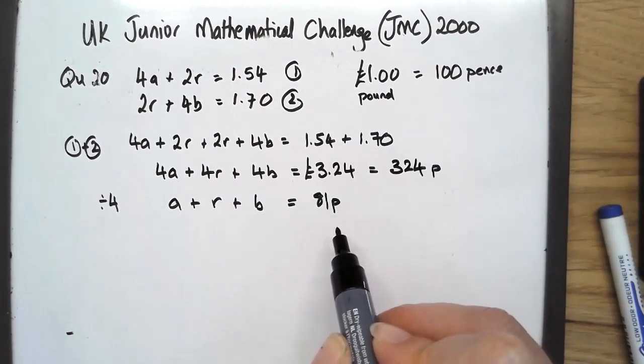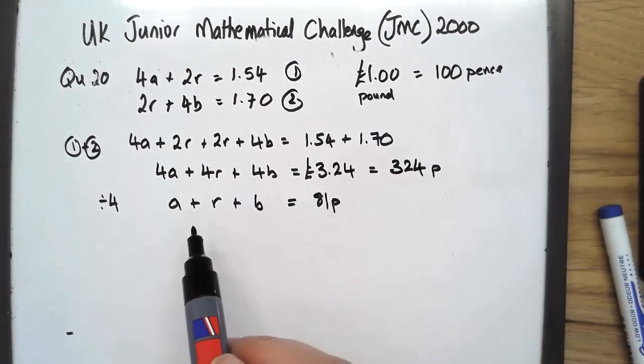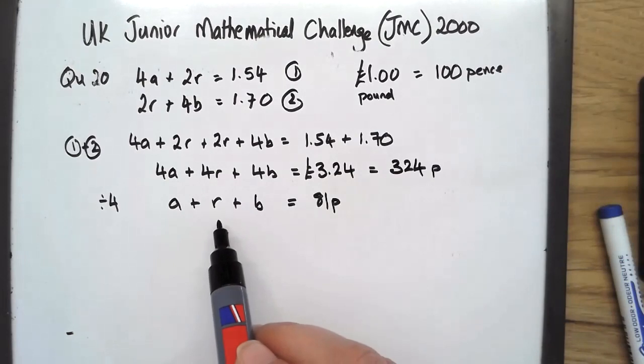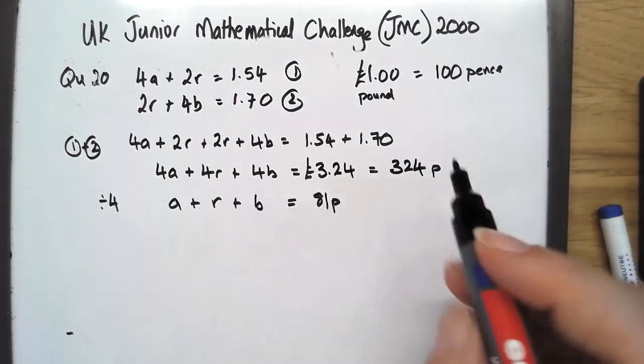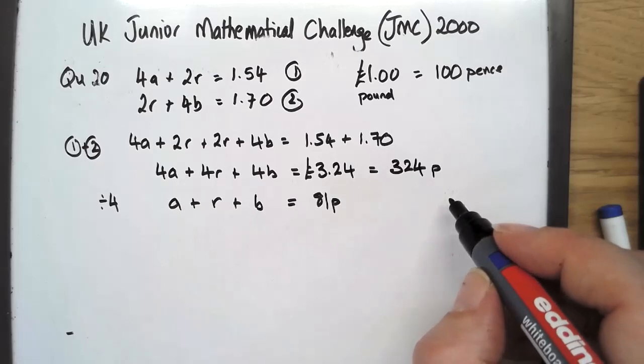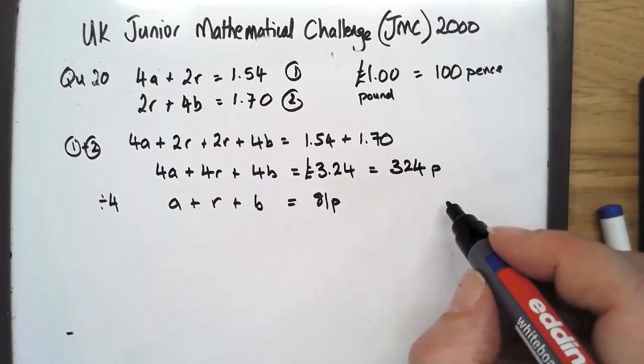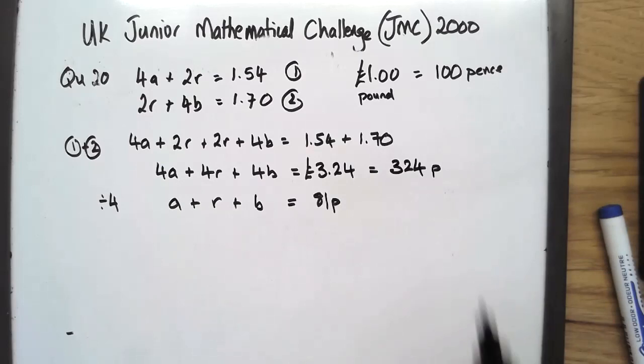And we're asking the question for what he had to pay if he bought one apple, one orange and one banana. £0.81, and therefore the answer is E.